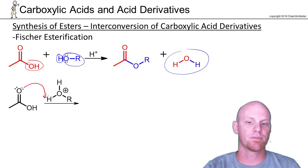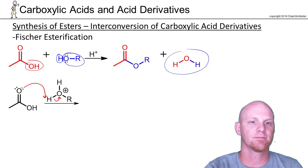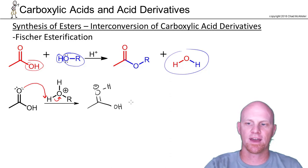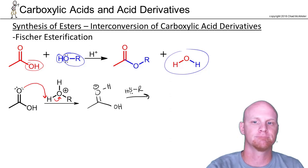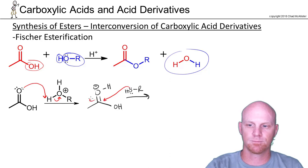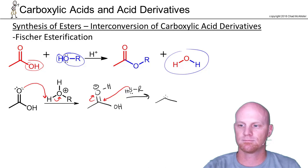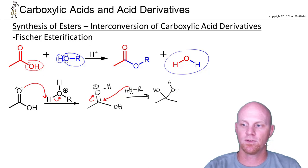The first step is simply to protonate our carboxylic acid. Now that we've protonated our carboxylic acid, an alcohol — which is a weak nucleophile — will be able to come in and attack. We kick the electrons up to the oxygen. So we now have an alcohol attached, and what used to be an alcohol is now attached as well.